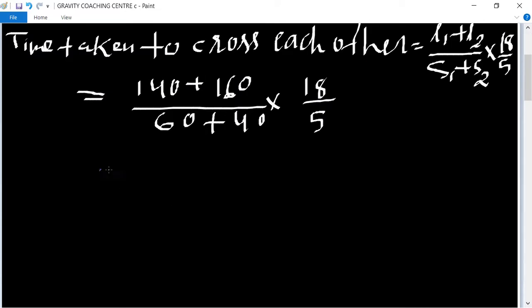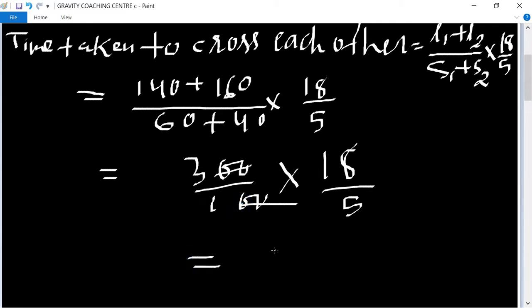Equal to 300 upon 100 into 18 upon 5. Cancel the zeros, 18 times 3 is 54, so 54 upon 5.